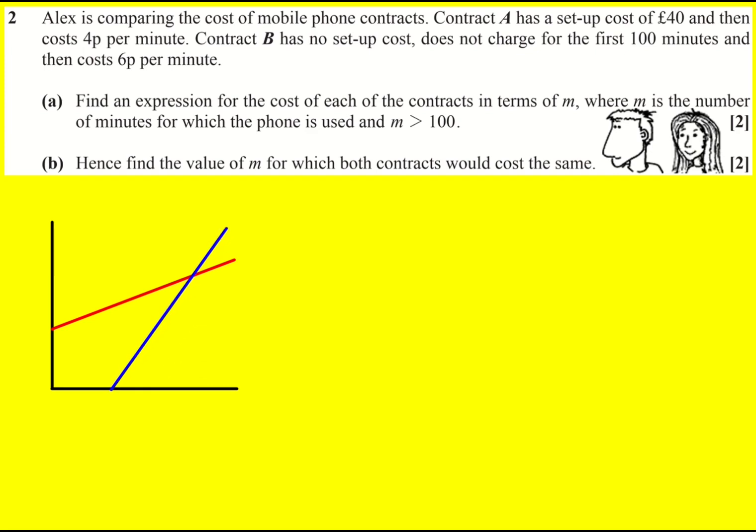At some point they're going to intersect which is what we're interested in in part B. So this is contract A and this is contract B. This is not essential for the question but I think it illustrates what's going on quite nicely.